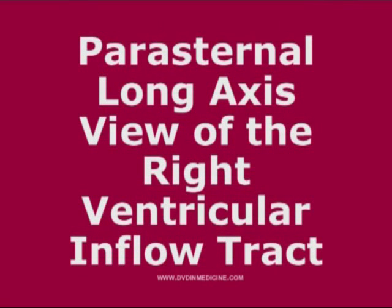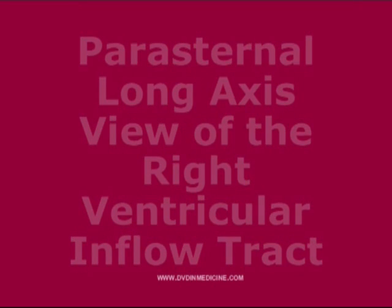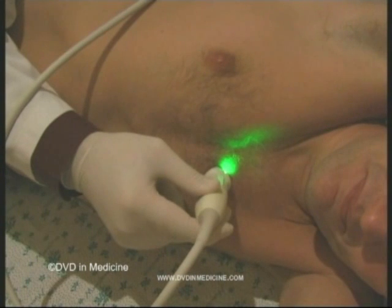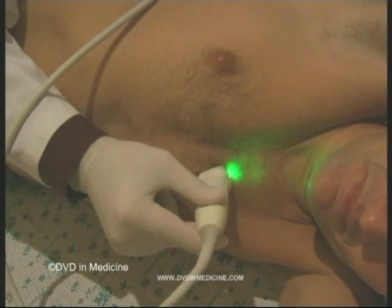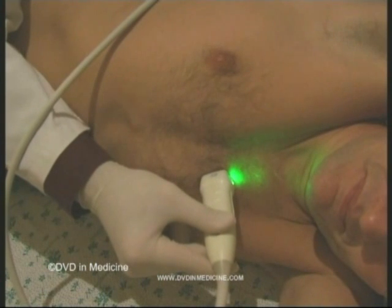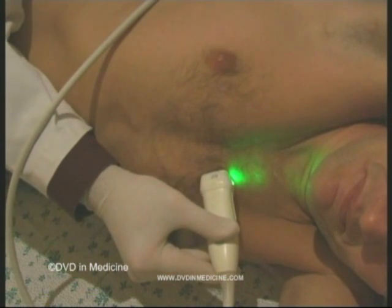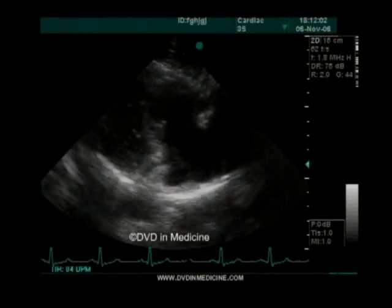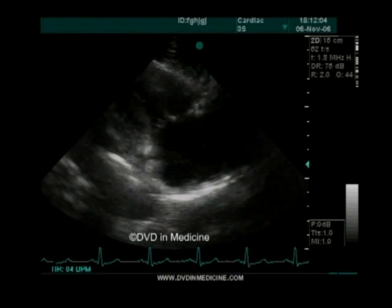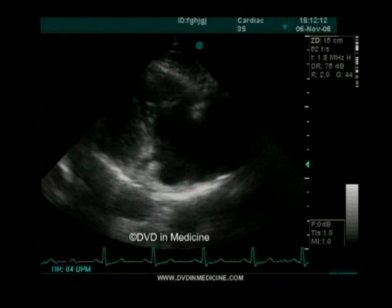Parasternal long axis view of the right ventricular inflow tract. After one has obtained the parasternal long axis view of the left ventricle, one can rotate the transducer a bit clockwise and angle it as if one is trying to look under the xiphoid process. In this image, one can see the position and motion of the tricuspid valve leaflets.